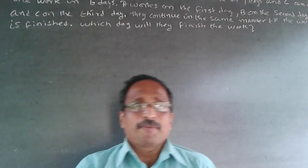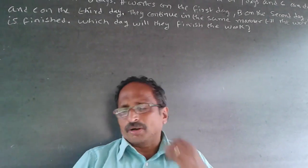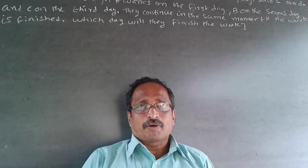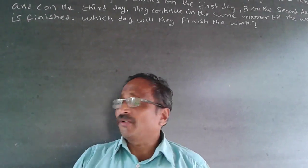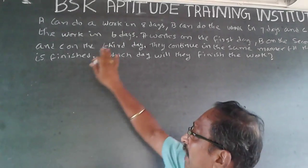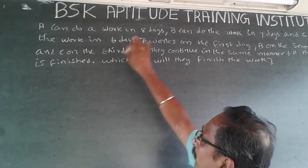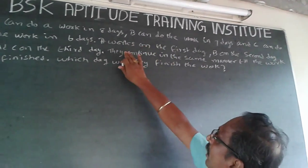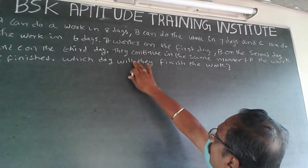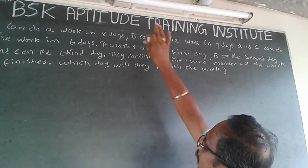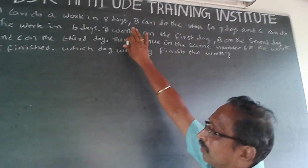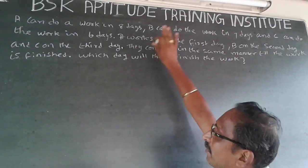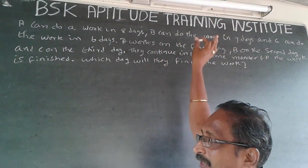This is a contrary-to-aptitude time and work problem. What you understand is: A works on the first day, B on the second day, C on the third day, and they work continuously like this — A working on the fourth day, B on the fifth day, C on the sixth day, then 7, 8, 9, and so on.